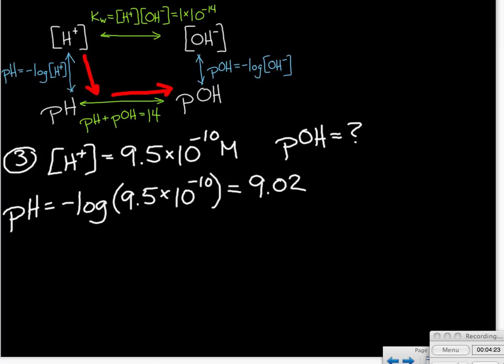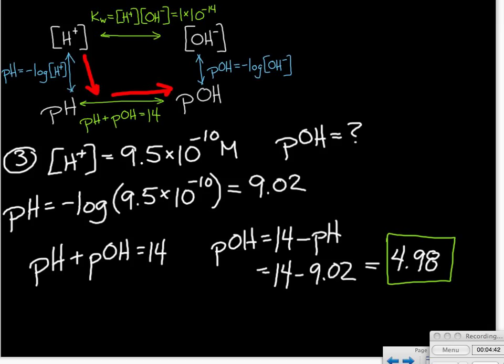Performing that function, you should get that the pH is equal to 9.02. Since the pH plus the pOH must add up to 14, if we rearrange that equation to solve for the pOH, it's simply the pOH is equal to 14 minus the pH. We can substitute our number in and get our pOH of 4.98.